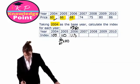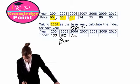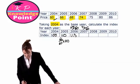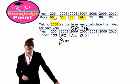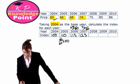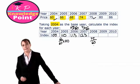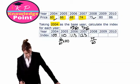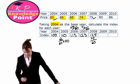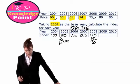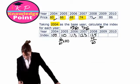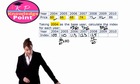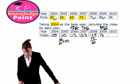Our index for 2007 will be 74 divided by 60 multiplied by 100, giving us 123. For 2008, our price is 75 divided by 60 multiplied by 100, giving us 125. In 2009, our index will be 80 divided by 60, multiplied by 100, giving us 133.